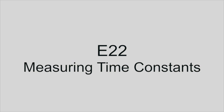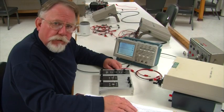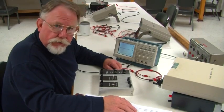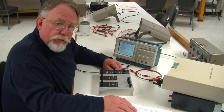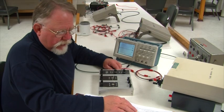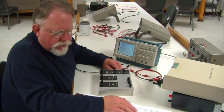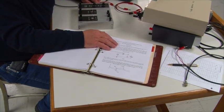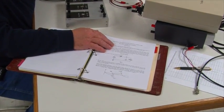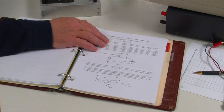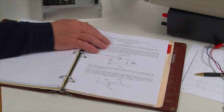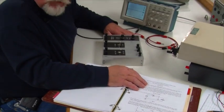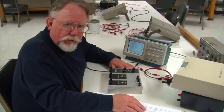In experiment E22, we're going to measure some RC and LR time constants, and we're going to look at some transients that show up in circuits under certain circumstances. All of your studying so far in circuits has been after they have reached the steady state, but the instant you turn on the power to a circuit, sometimes some odd things can happen, and we're going to look at that in this experiment.